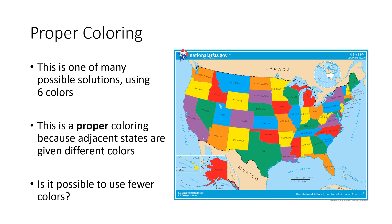So the question now is, is it possible to use fewer colors? What we want to think about is the number of colors that we need to color in a map.